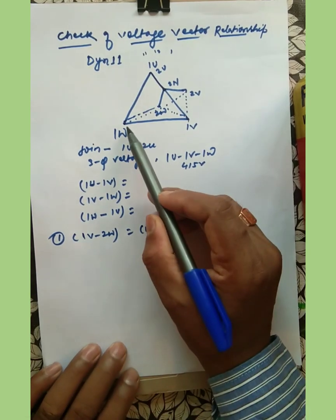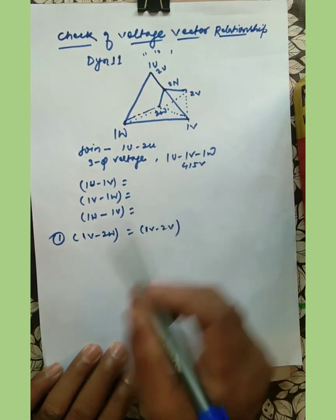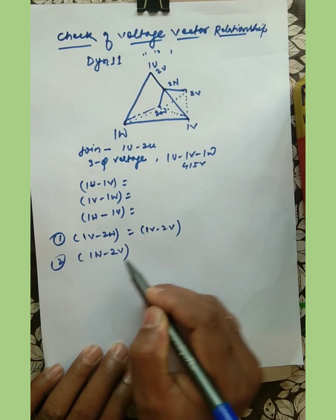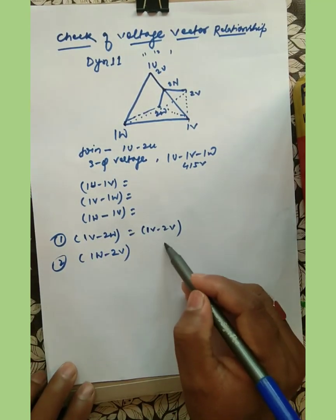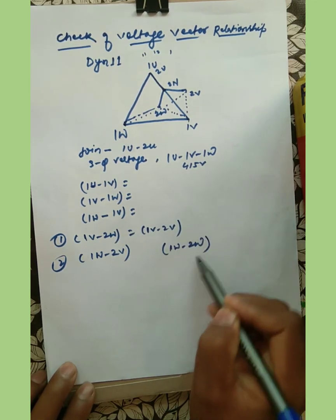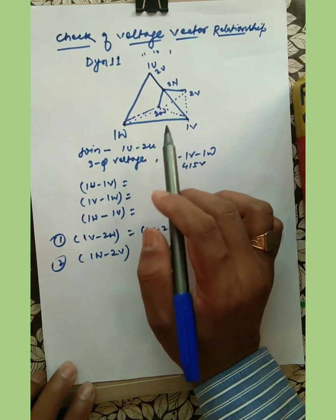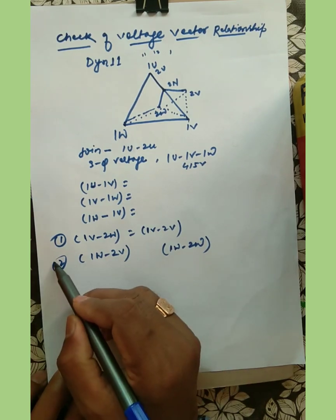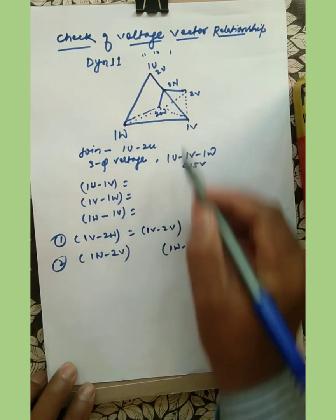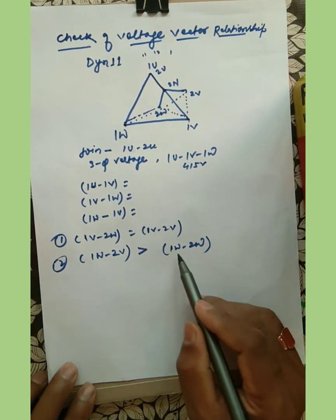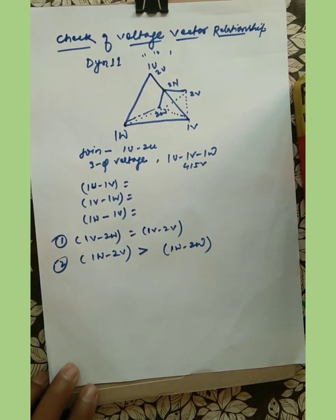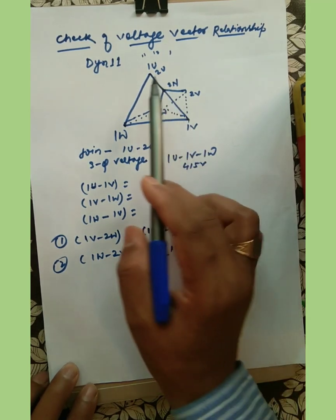The second relationship is that we measure the voltage between 1W and 2V, and between 1W and 2W. The condition is that the magnitude of 1W-2V will always be greater than 1W-2W. That is the second relation.